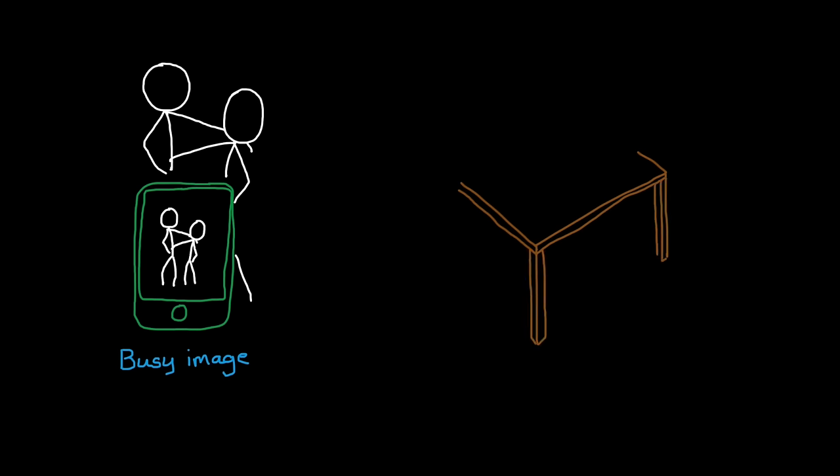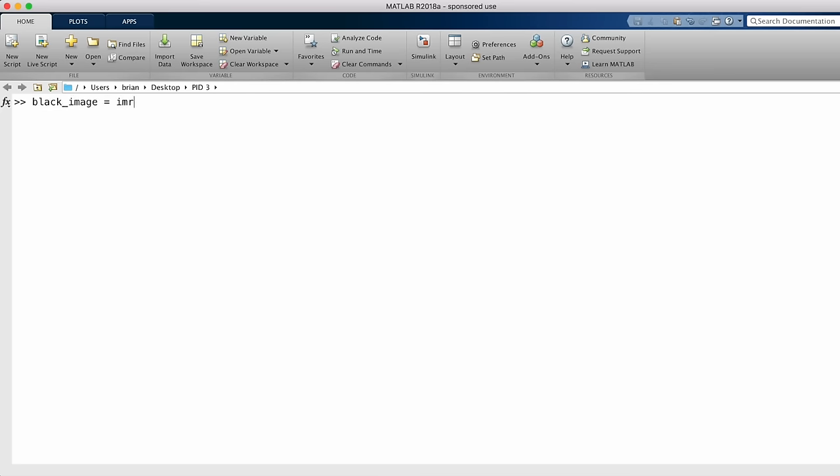An easy way to demonstrate this is to take a picture with your cell phone. But instead of a busy image where you might not notice some really subtle noise, take a black image by laying it down on a flat surface so that no light can get in.